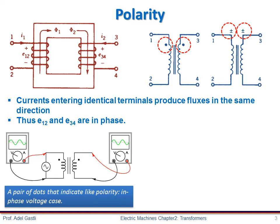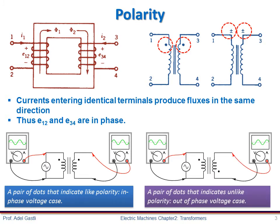On the other hand, if the dots on each winding of the transformer do not match up, the phase shift will be 180 degrees between the primary and secondary induced EMFs. This is denoted as the out-of-phase voltage case.